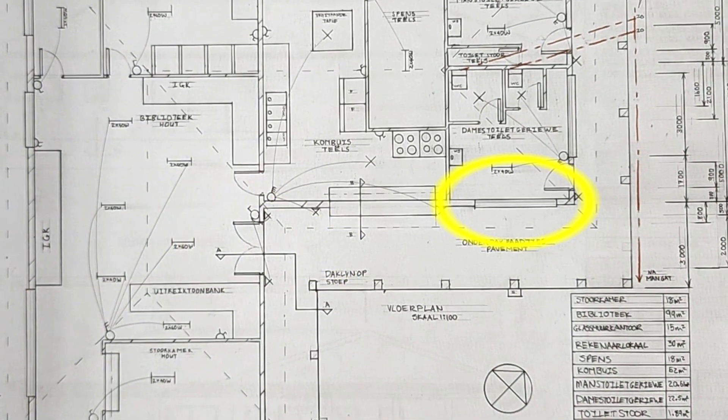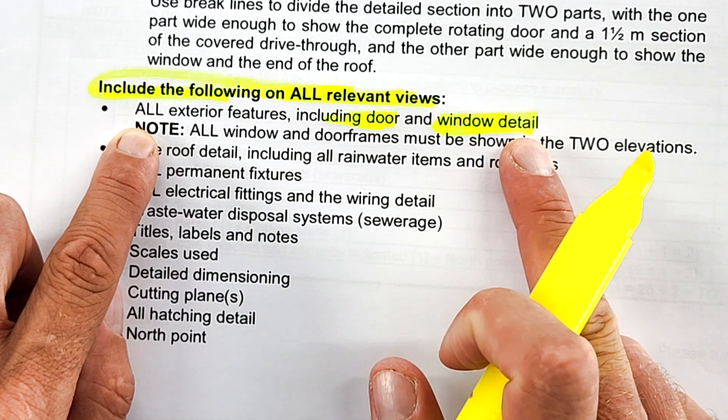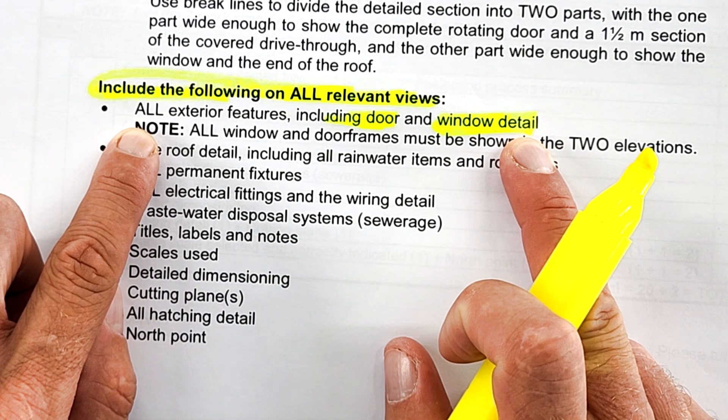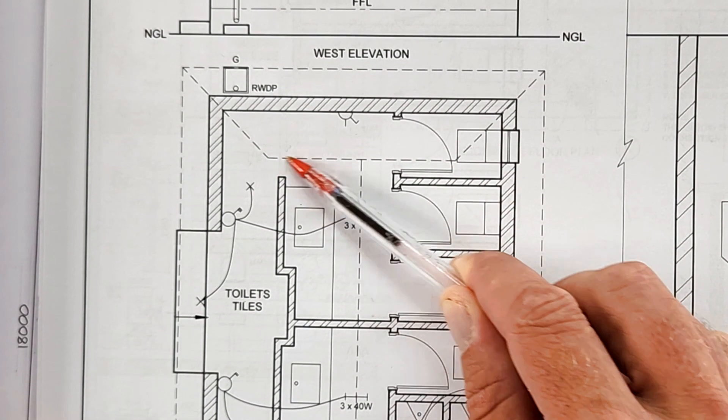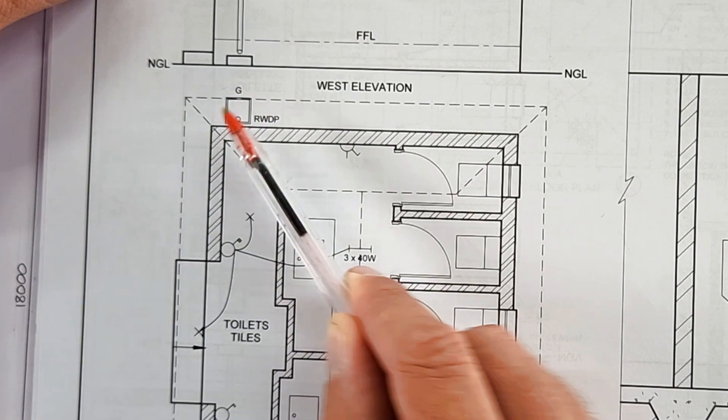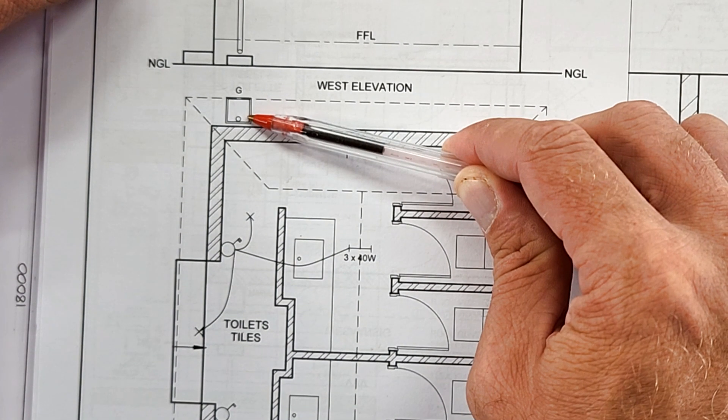You need to include all exterior features, the door and window details in this actual floor plan. The roof detail—in other words, your roof overhang, roof lines, all rainwater items—roof lines, rainwater items includes your rainwater downpipes, your gullies.